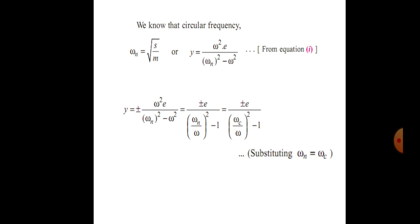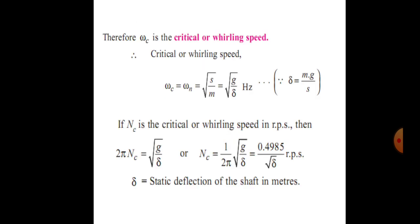By simplification we get: Y equals plus or minus E divided by (omega_n over omega) squared minus 1. Setting omega_n equal to omega_c, therefore omega_c is the critical speed — also called the whirling speed.